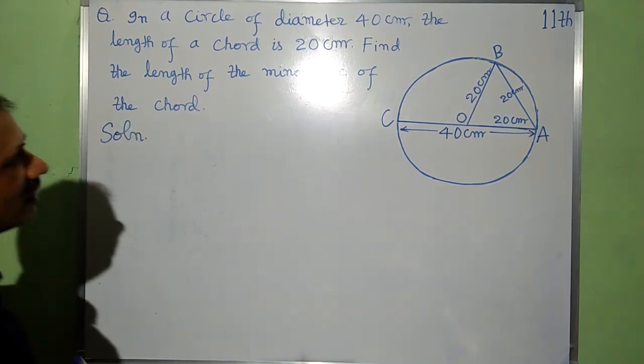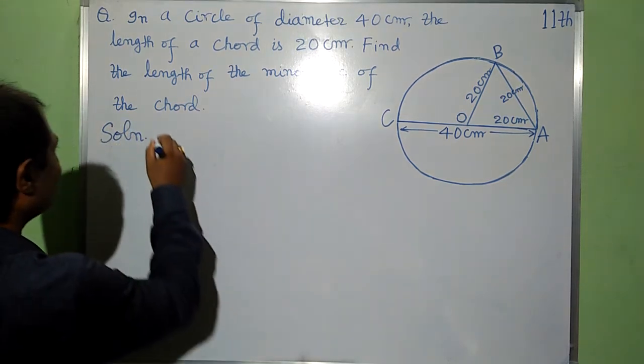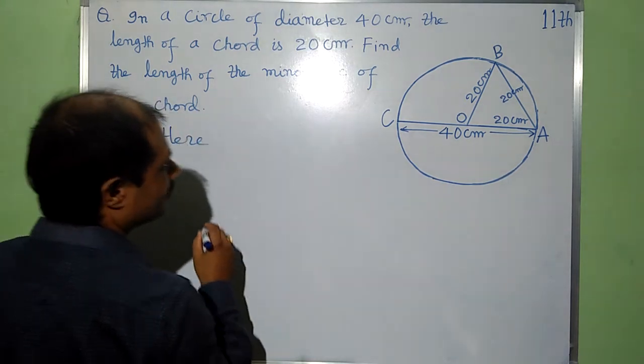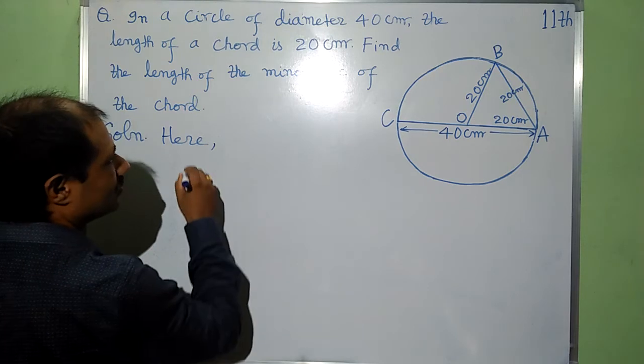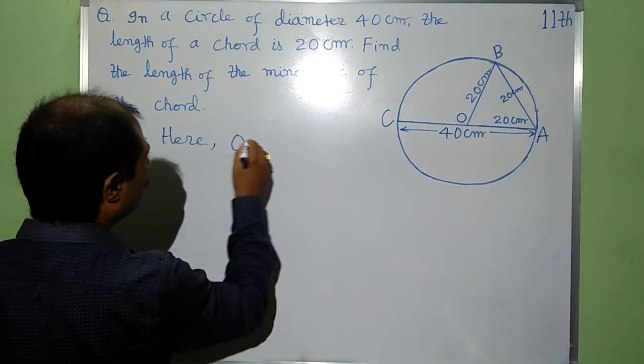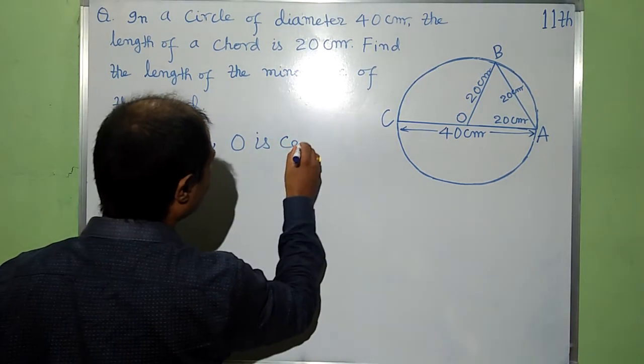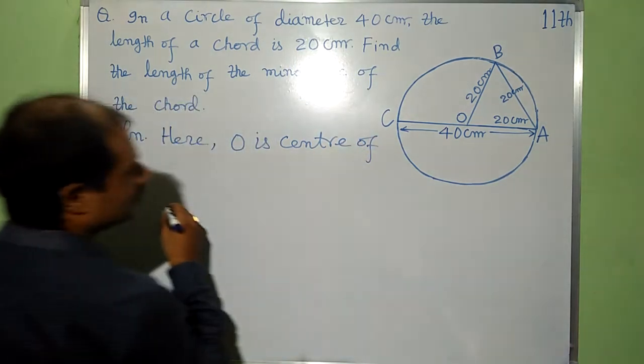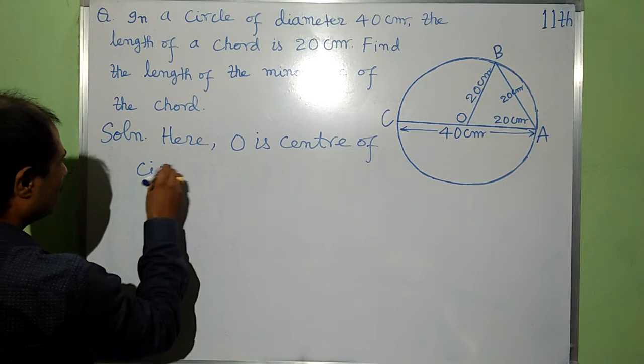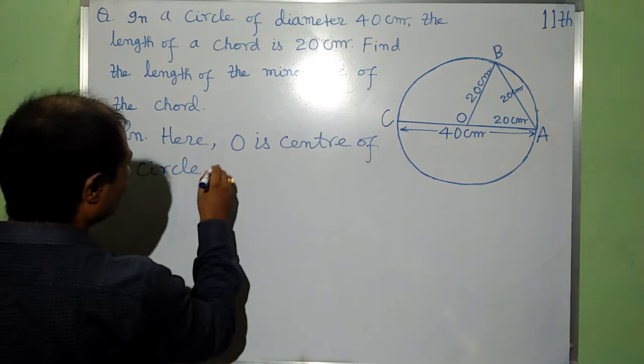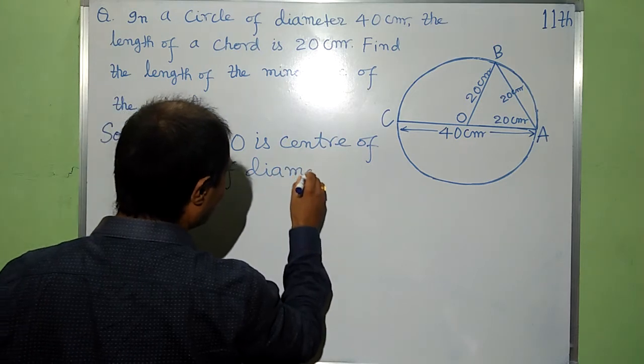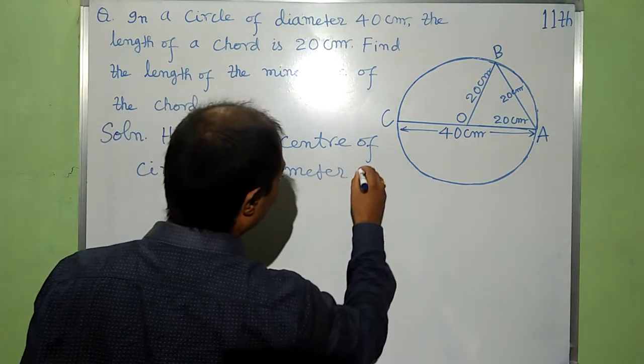Solution. First of all, we have to write given parts here. Here, O is center of circle of diameter 40 cm.